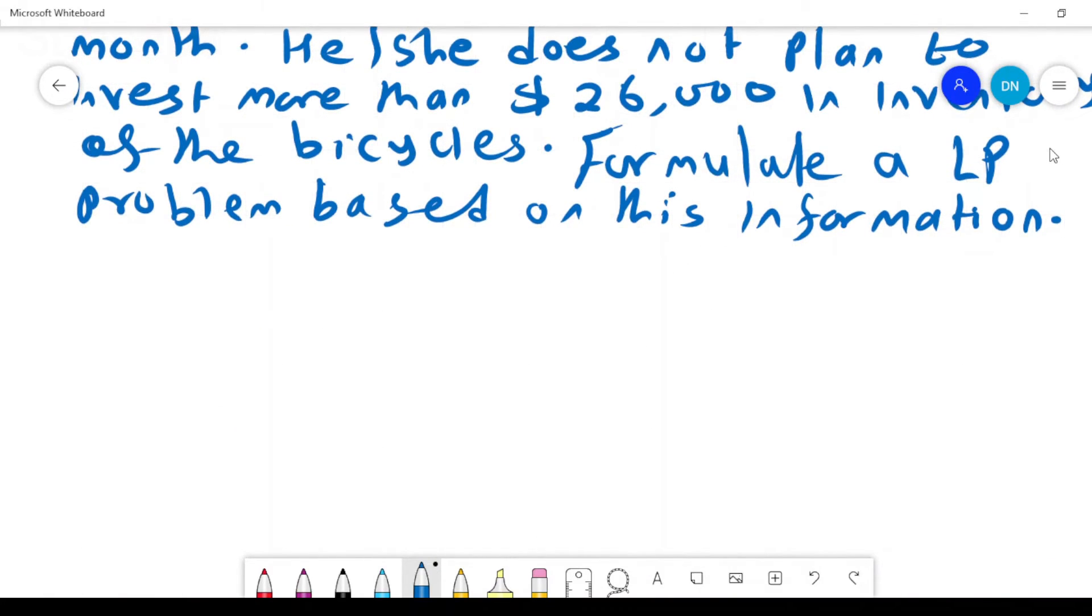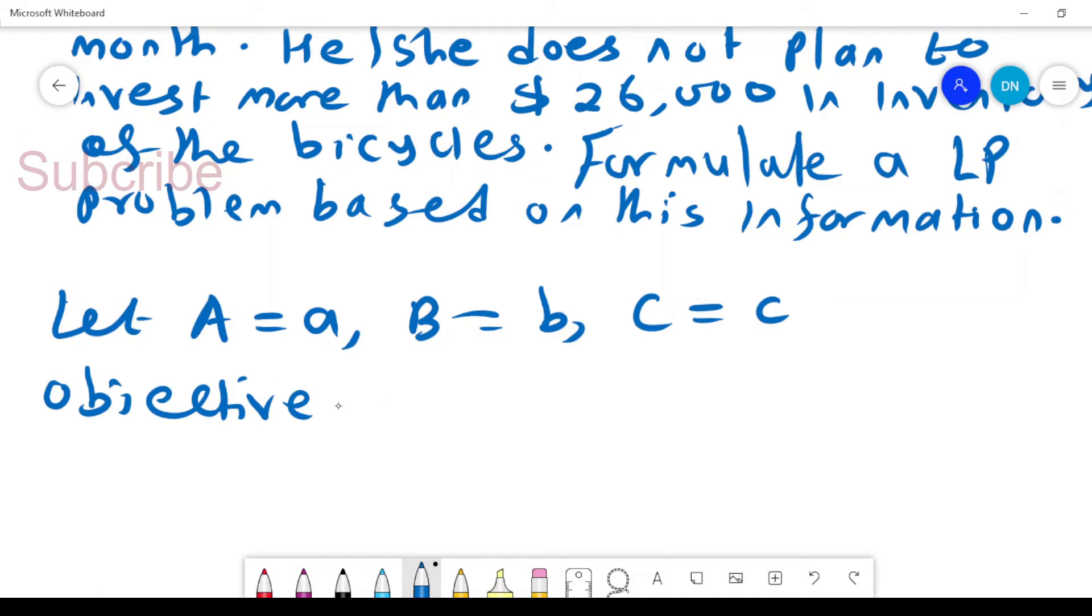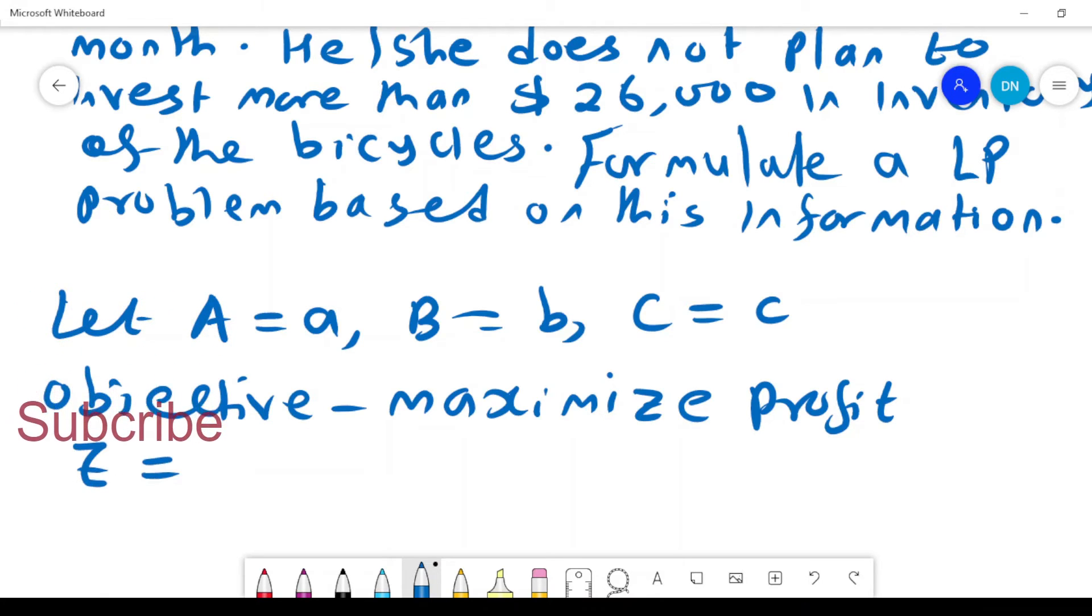We want to formulate a linear programming problem based on this information. Let A = a, B = b, C = c. The objective of the store owner is to maximize profit. The profit of type A is $20, type B is $40, and type C is $30. So the objective function is Z = 20a + 40b + 30c.